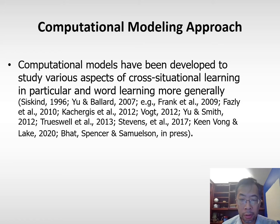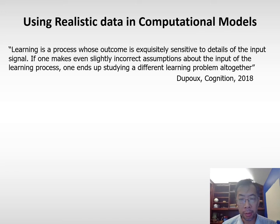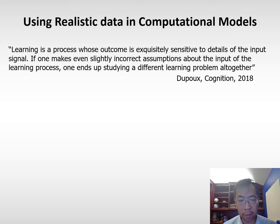For the first direction, computational modeling: models have been developed to study various aspects of cross-situational learning and word learning more generally. Different from previous models, our aim is to use realistic data. The rationale is well articulated in a recent review paper published in Cognition: learning is a process whose outcome is sensitive to details of the input signal. If one makes even slightly incorrect assumptions about the input, one ends up studying a different learning problem.